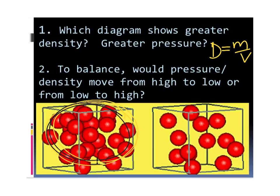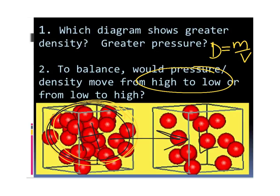Now in nature, nature doesn't like to be unbalanced like this, so it wants to become balanced or at equilibrium. Pressure flows from high to low. So on our diagram, pressure is going to go from this high pressure to this low pressure — it will flow from high to low. There's our review, and we're going to be needing this background information to get into our air pressure systems.